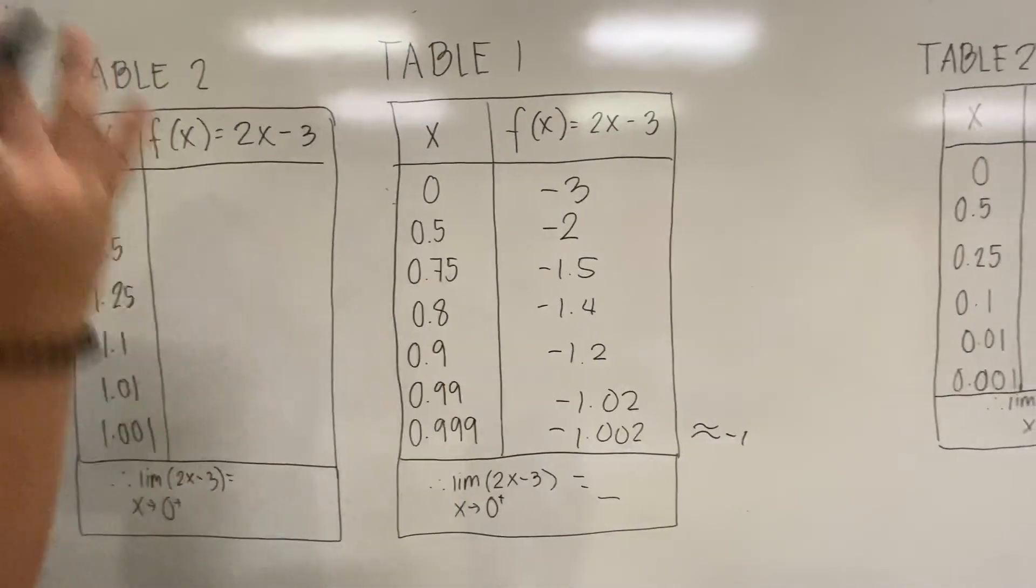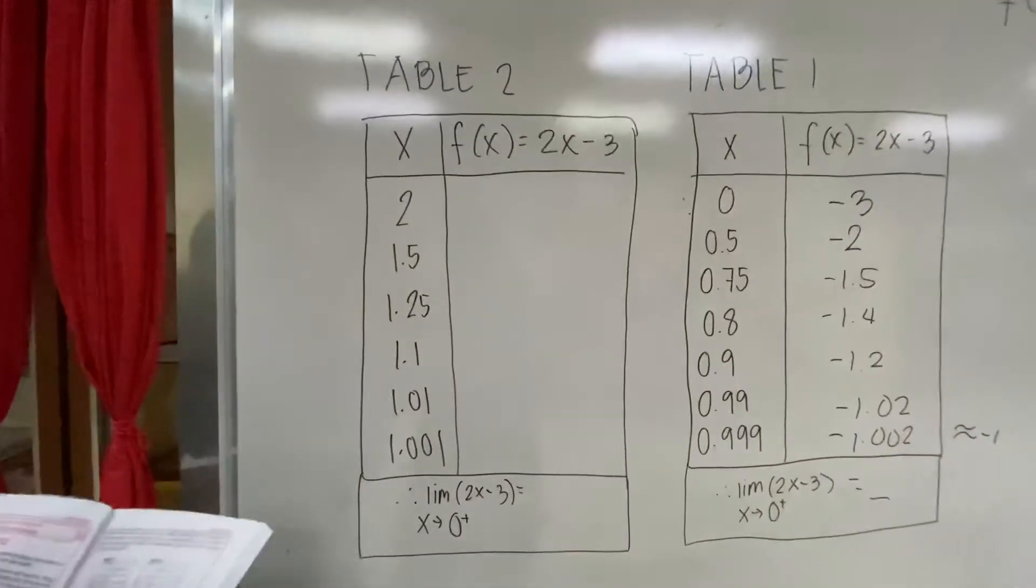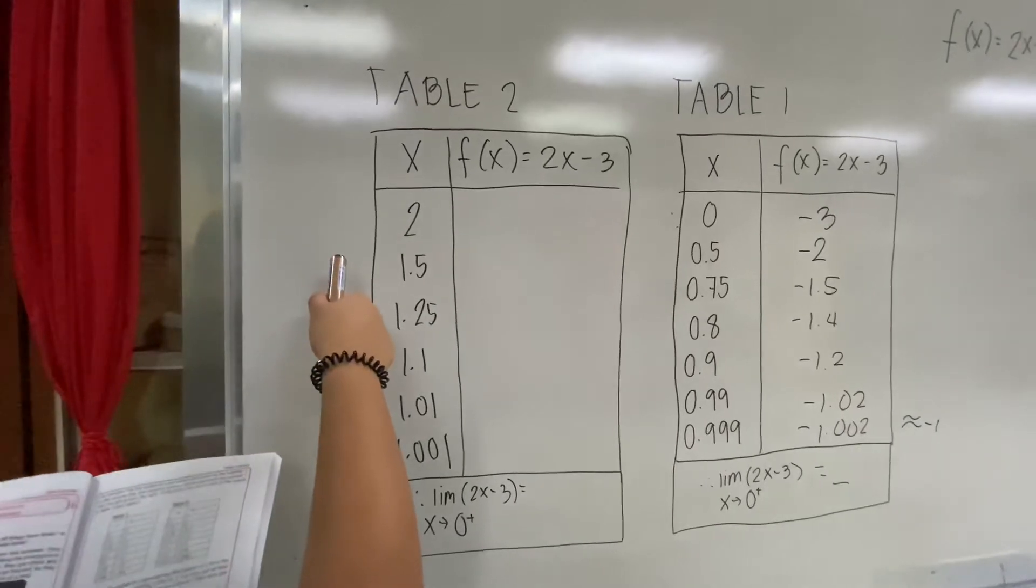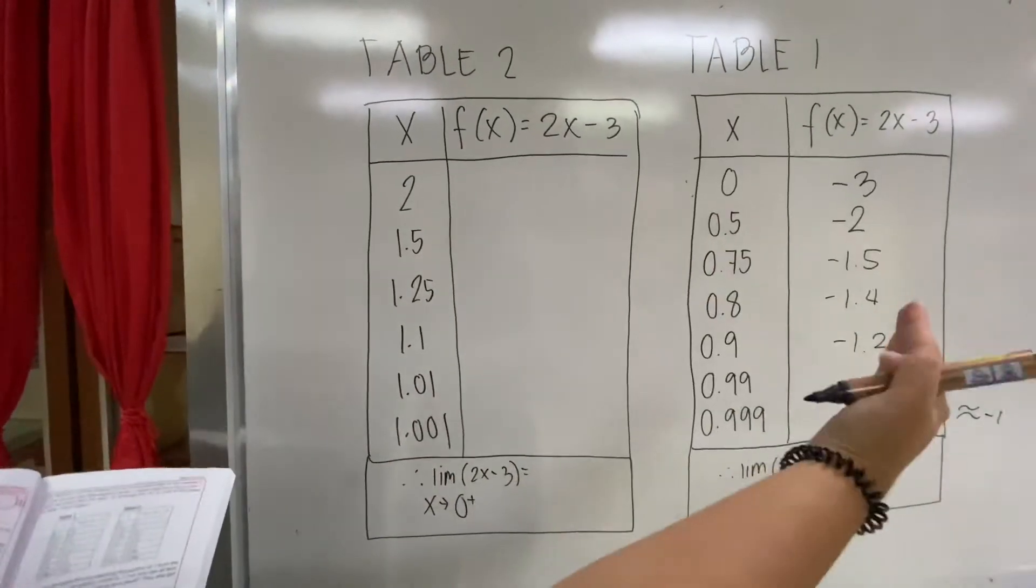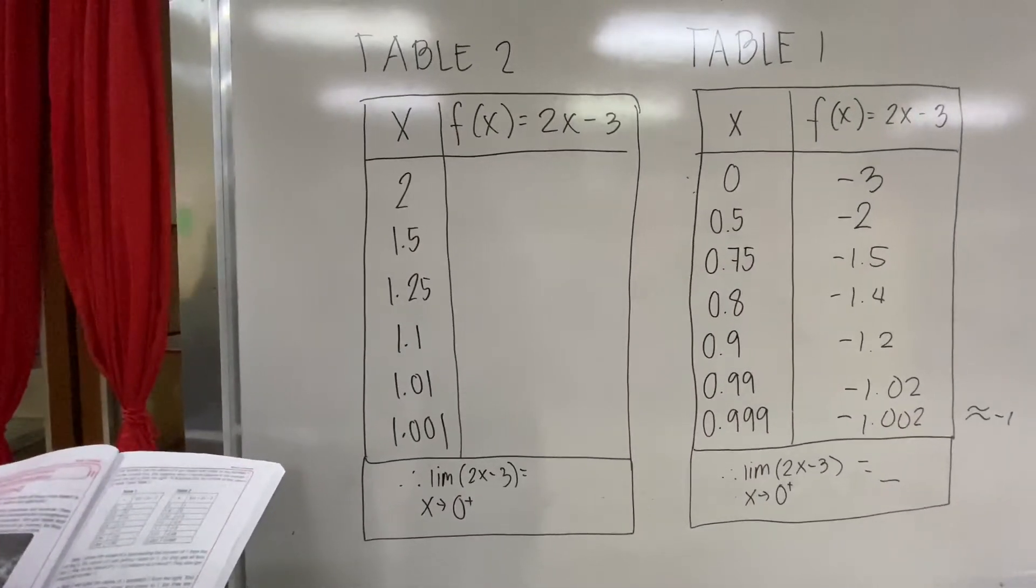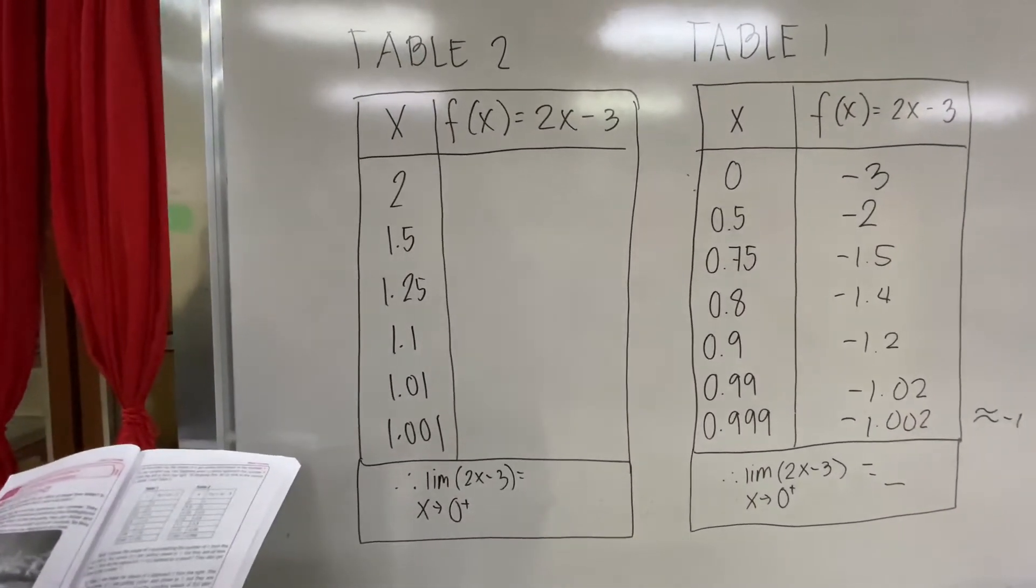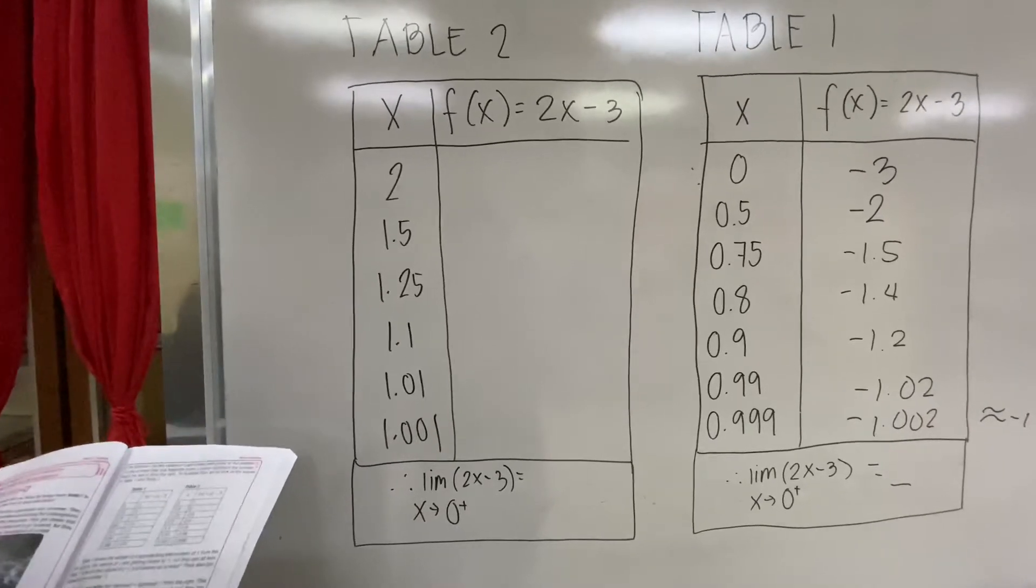Let's move on to table 2. In table 2, we make the values of x approach 1 from the right. This time, the values of x are getting closer and closer to 1, but they are all greater than 1.